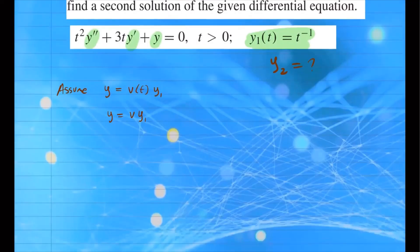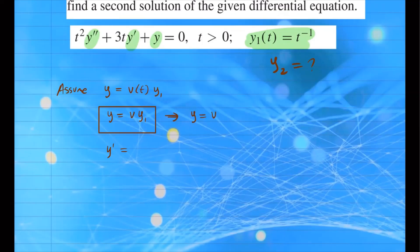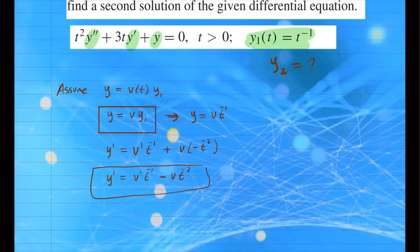So if y is equal to v times t to the negative 1, then y prime — we differentiate using the product rule, since both v and t to the negative 1 are functions. So y prime is: derivative of the first, v prime, times t to the negative 1, plus v times the derivative of t to the negative 1. Bringing down the power, y prime equals v prime t to the negative 1 minus v t to the negative 2.